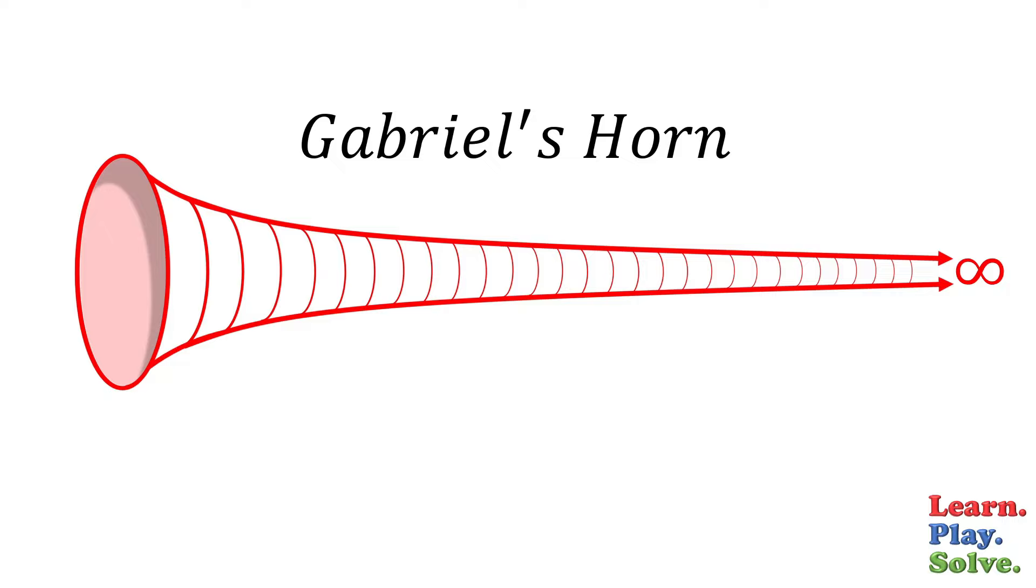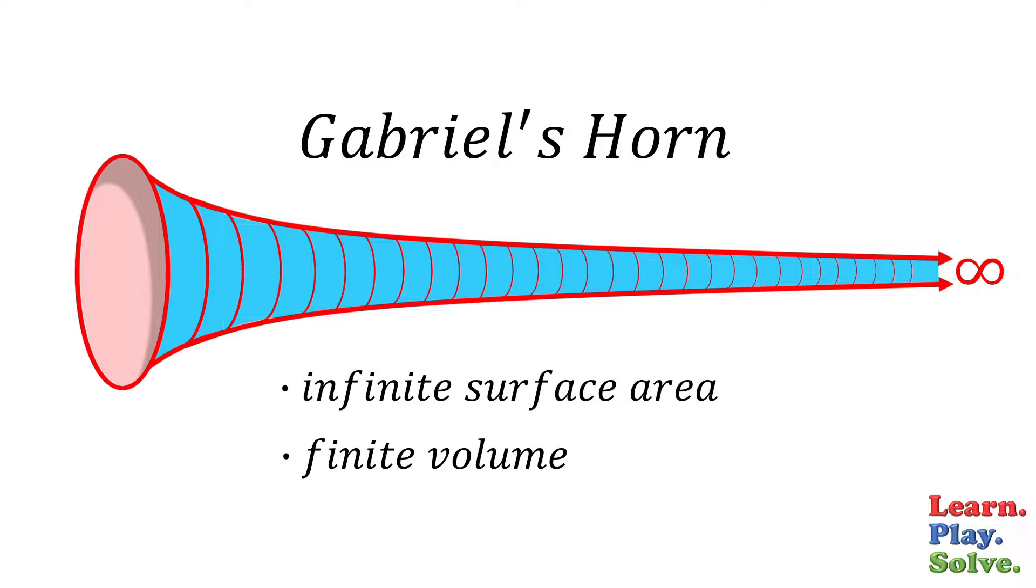What's interesting about Gabriel's horn is that it has an infinite surface area, but it also has a finite volume. What this implies is that if you tried to paint its entire surface, whether the inside or out, you would never have enough paint.